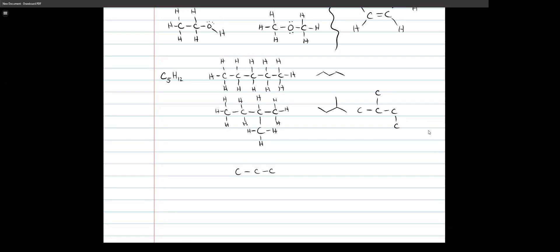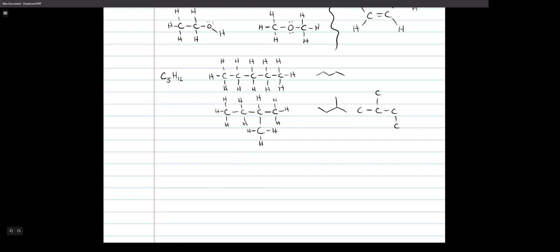With three carbons in a row, if you try putting branches on the first and third, you just get the same as the five-in-a-row structure again — one, two, three, four, five carbons either way. Three is the longest straight chain you can have here. The only other option is to put two branches on the middle carbon.